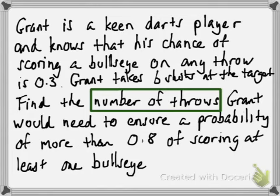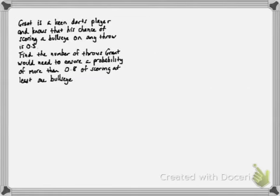The number of throws is actually n — that's what we're trying to find. We're not trying to find the probability this time; we're trying to find n. So let's go a bit deeper into this question. We're trying to find n as the answer to the question.